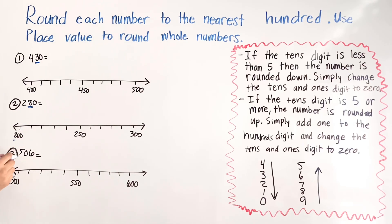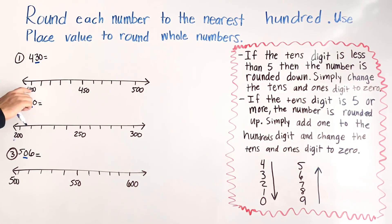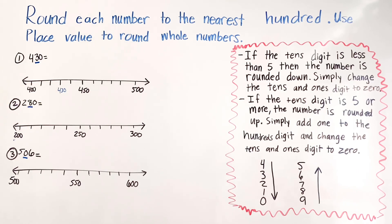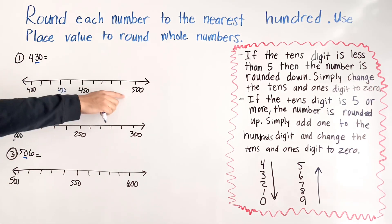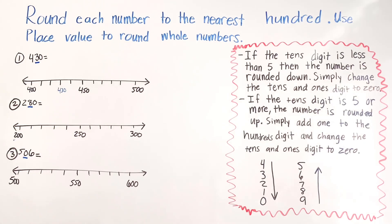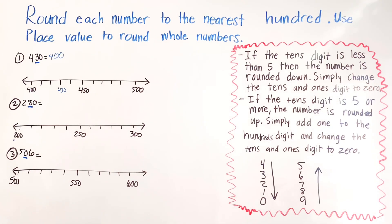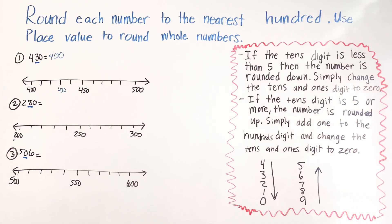For number one we have 430. On the number line we have 400, 410, 420, 430. Is 430 closer to 400 or closer to 500? It's only three spaces from 400, but seven spaces from 500, so we round down to 400. We also look at the tens digit, which is three — and our arrow shows three means rounding down, so we round to 400.